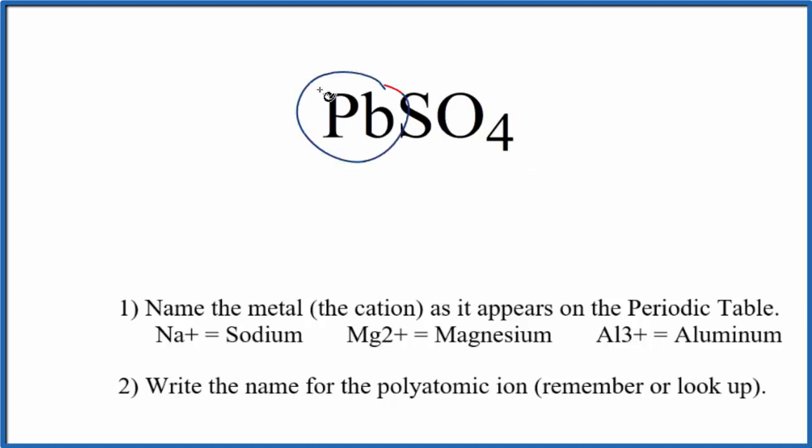We also have Pb, which is lead, a transition metal. So we have our metal and our group of nonmetals in the polyatomic ion. This is an ionic compound.